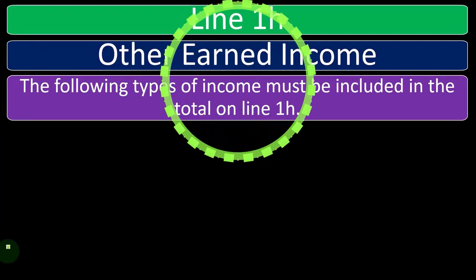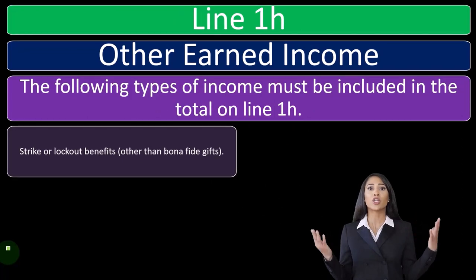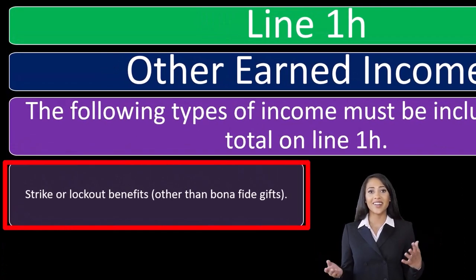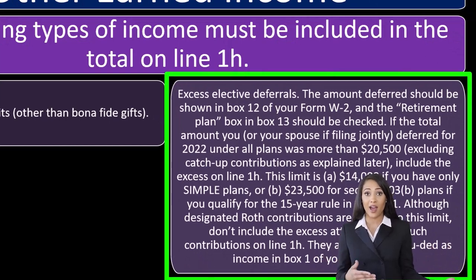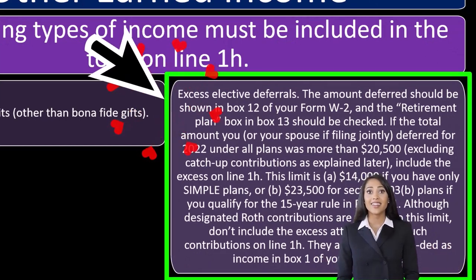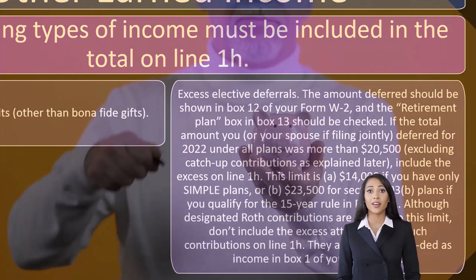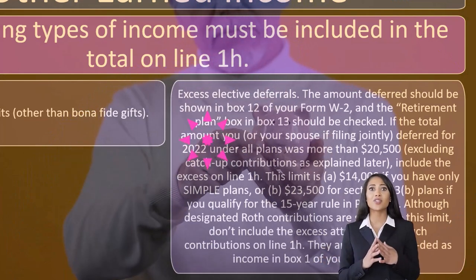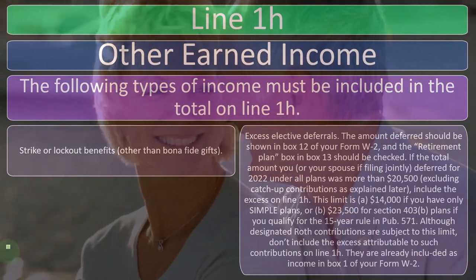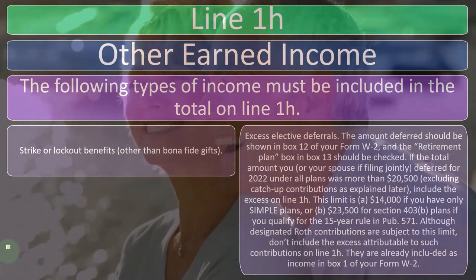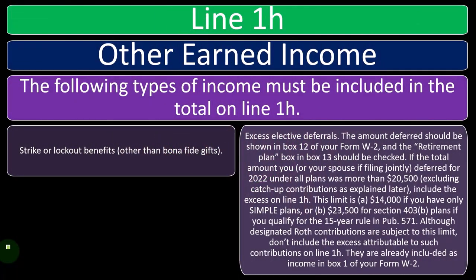Line 1H: other earned income. The following types of income must be included in the total on line 1H: strike or lockout benefits other than bona fide gifts; and excess elective deferrals. The amount deferred should be shown in Box 12 of your Form W-2, and the retirement plan box in Box 13 should be checked. If the total amount you or your spouse filing jointly deferred for 2022 under all plans was more than $20,500, excluding catch-up contributions, include the excess on line 1H.